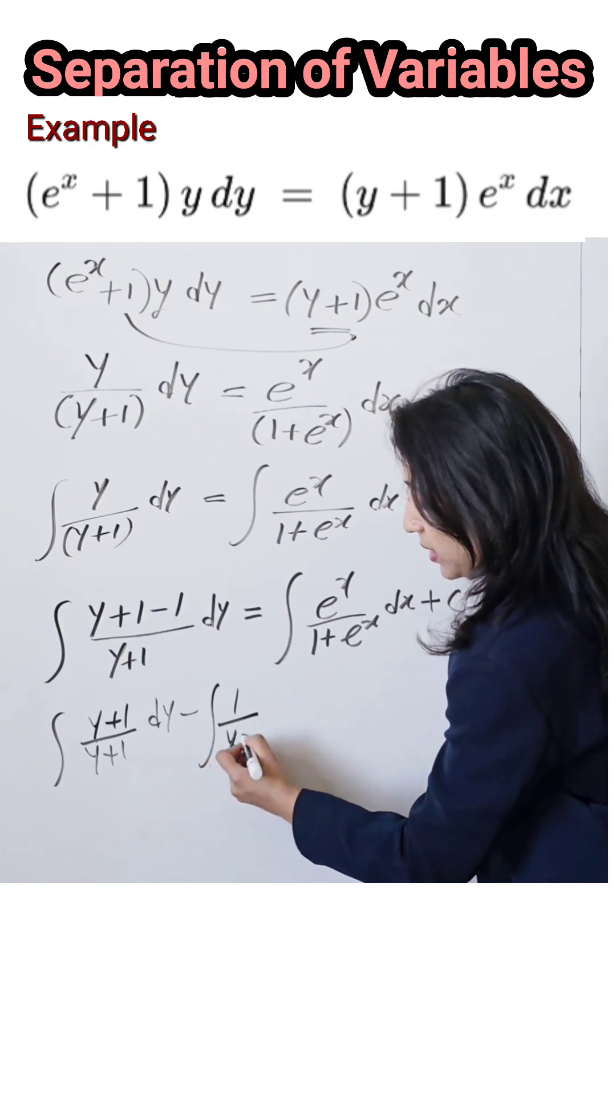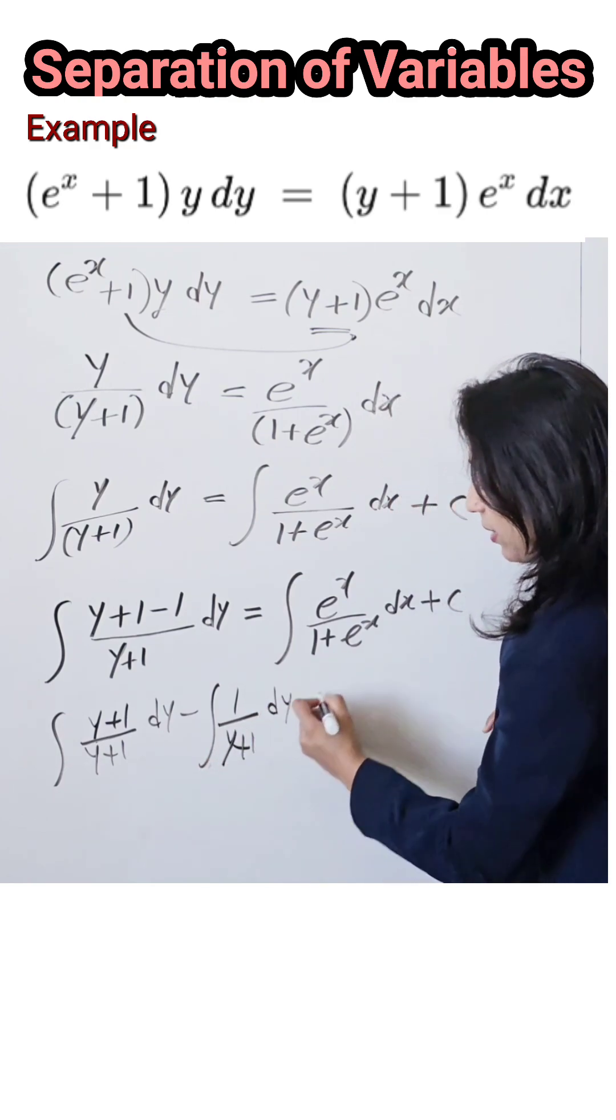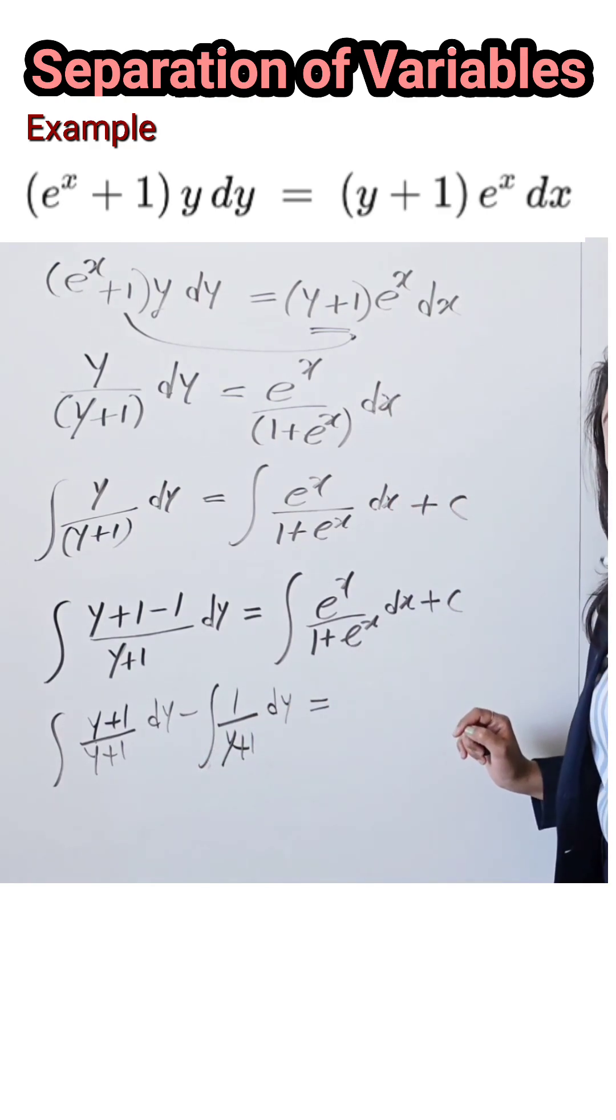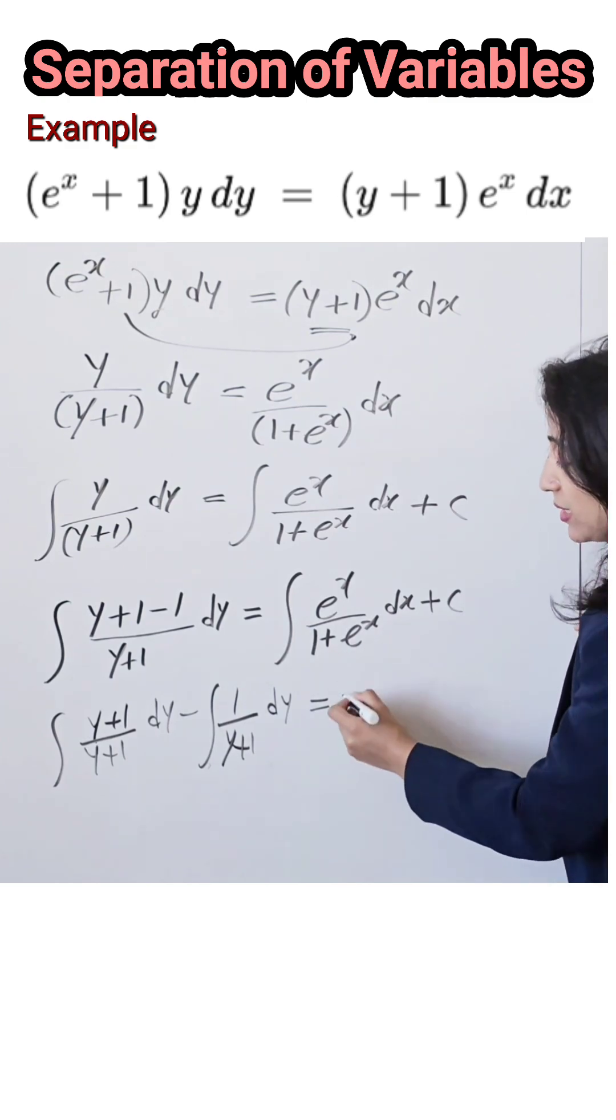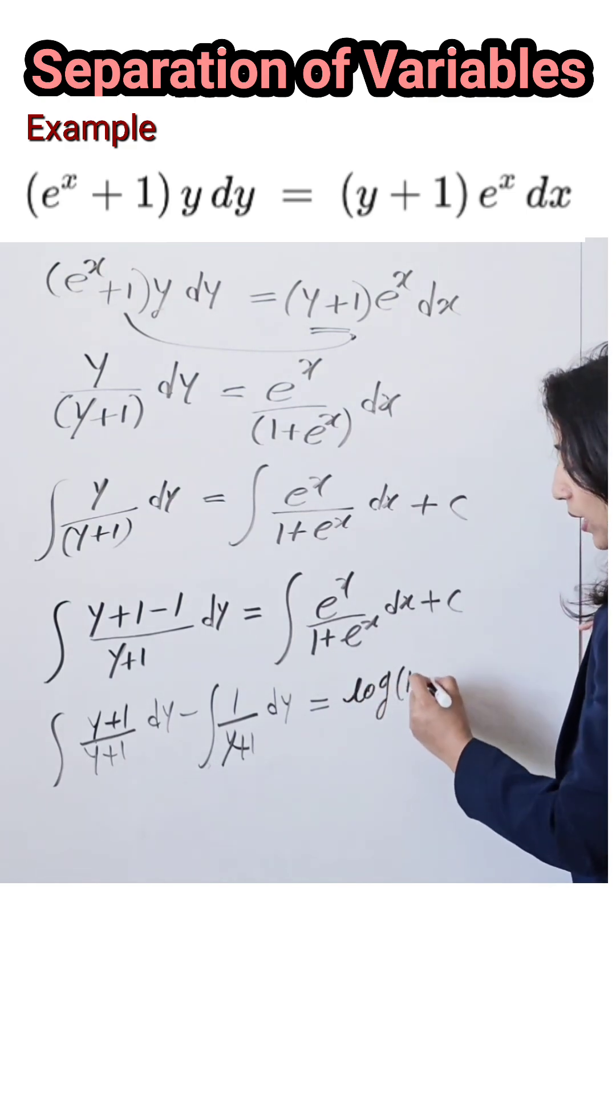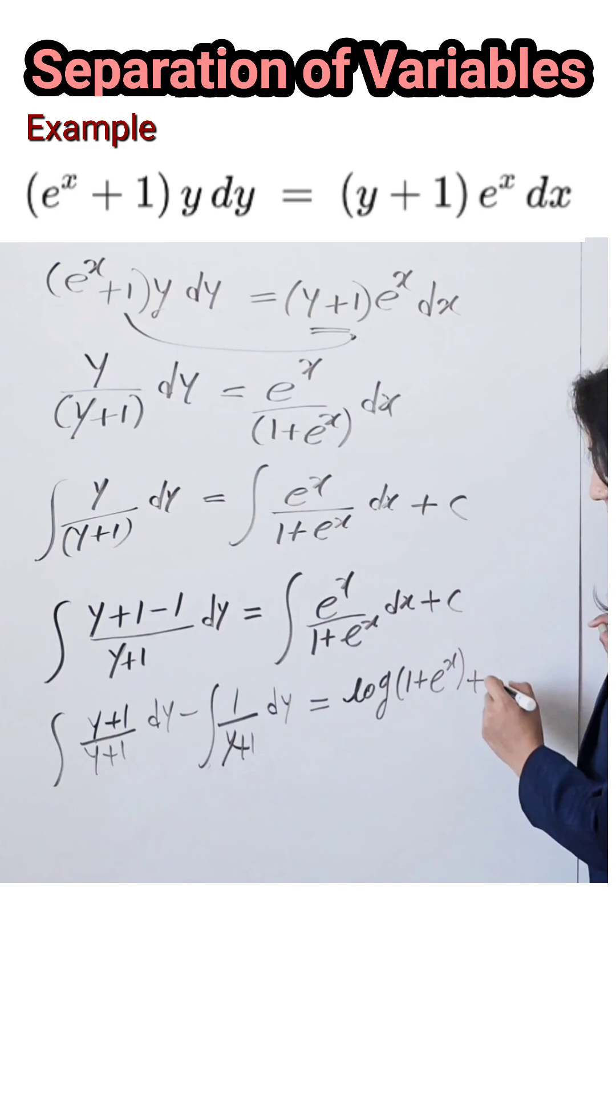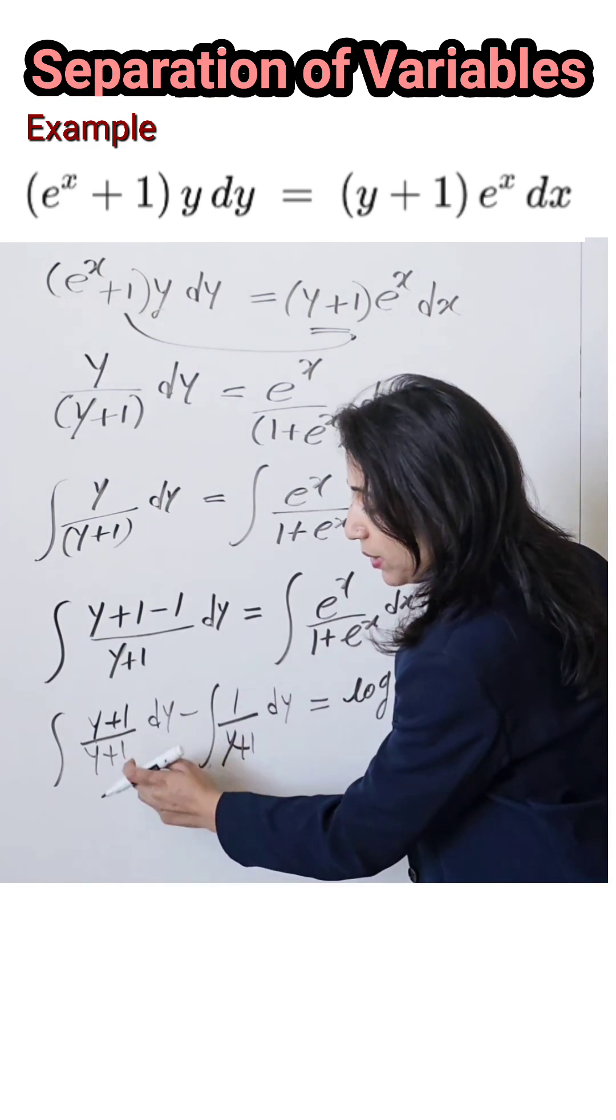Equal to, the derivative of the denominator term is contained in the numerator, so the integration of this term is nothing but log of (1 + e^x) plus the integrating constant c. Now here, (1+y)/(1+y) get cancelled, so it is simply dy.